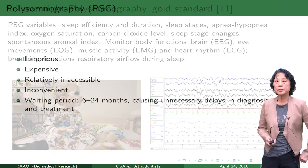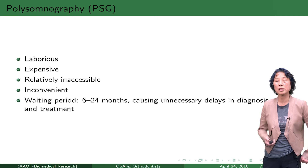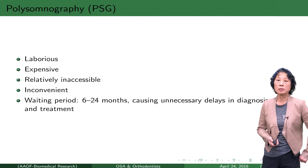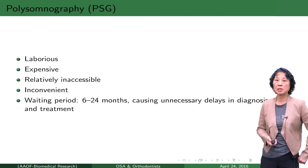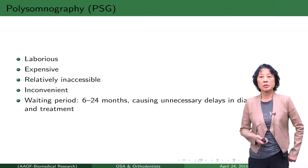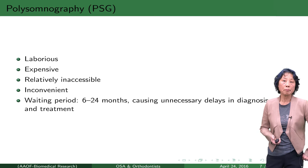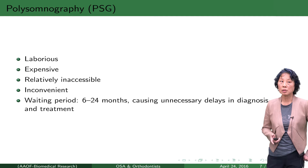However, PSG turns out to be very expensive and very laborious because children have to stay overnight in a lab, and parents and children have to travel. It's very inconvenient and expensive. In Alberta it's not covered by Alberta Health Care so people have to pay for it. It's not very accessible because there are not many sleep clinics, and the waiting period is about six to twenty-four months. Among growing children, this could be very dangerous in the sense that they may experience delays in diagnosis.